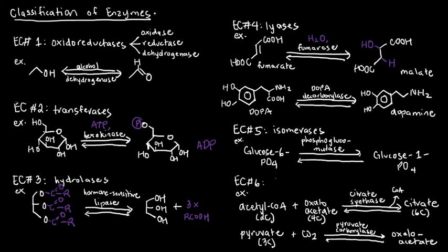They are actually classified using what we call the EC numbers, EC standing for the enzyme commission. And there are essentially six EC numbers or classifications, starting from one going all the way to six. And the basis of these different numbers is the type of reaction that has been catalyzed.